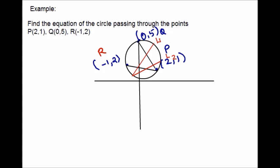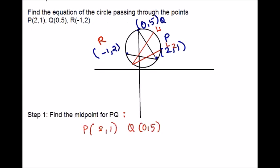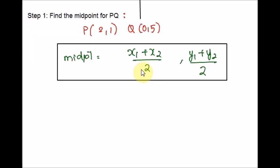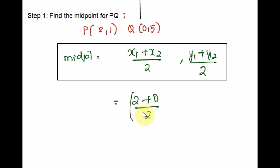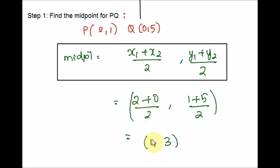Step 1: Find the midpoints of PQ and QR, and let us find the slope. Hope you are all familiar with the midpoint formula. You can take P as X1, Y1 and Q as X2, Y2. Plugging in the X coordinates and the Y coordinates: 2 over 2 is 1, 6 over 2 is 3. So the midpoint of PQ is (1, 3).